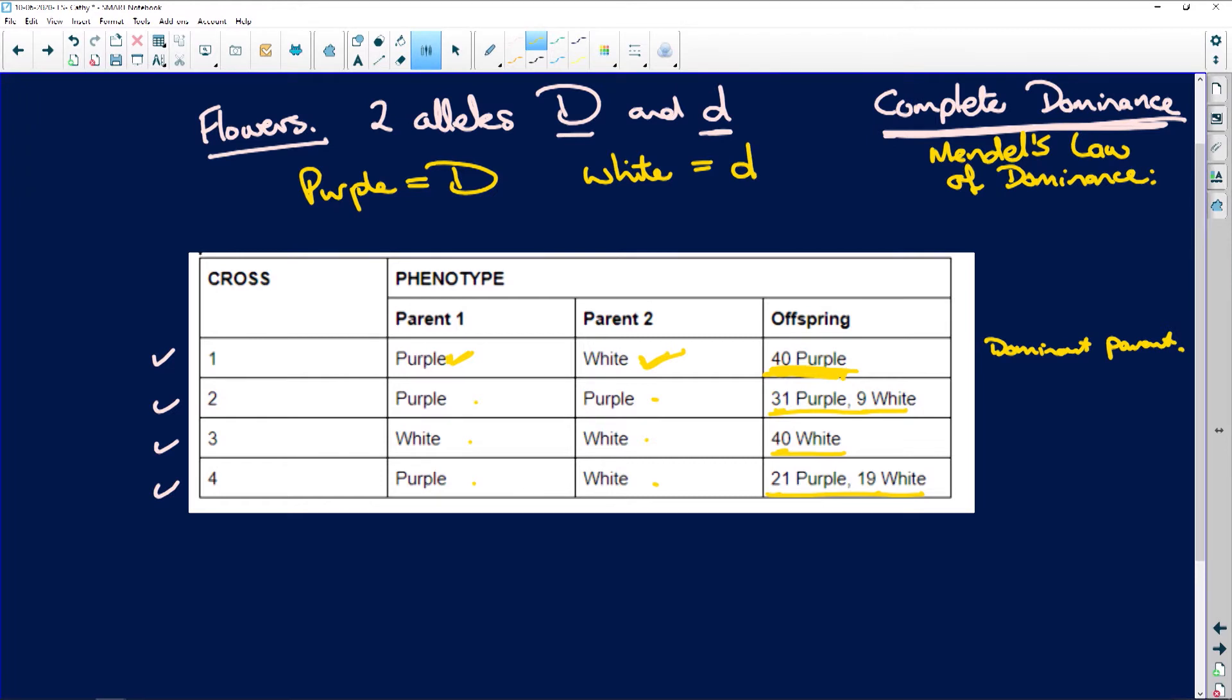Now, let's check that. You're not going to check it when you see here white and white gives you white. White and white, if it was heterozygous, then what would we have had here? We would have had purple flowers.